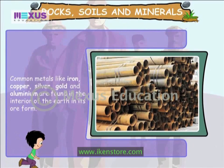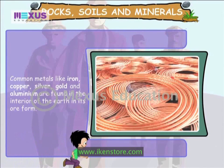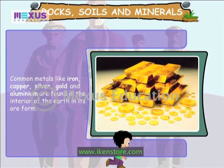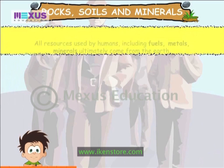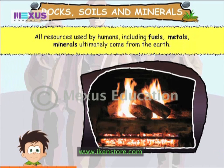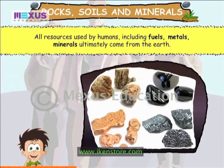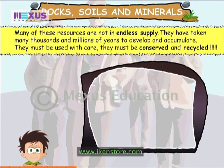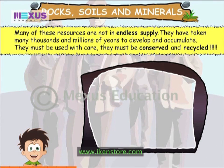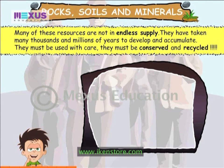Common metals like iron, copper, silver, gold and aluminium are found in the interior of the earth in their ore form. All resources used by humans including fuels, metals and minerals ultimately come from the earth. Many of these resources are not in endless supply. They have taken many thousands and millions of years to develop and accumulate.